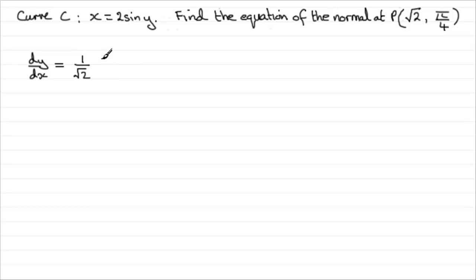So therefore, we should know that the perpendicular gradient is going to be the negative reciprocal of this. So the gradient of the normal is going to be the negative reciprocal, that would be minus root 2 over 1, or just simply minus root 2.